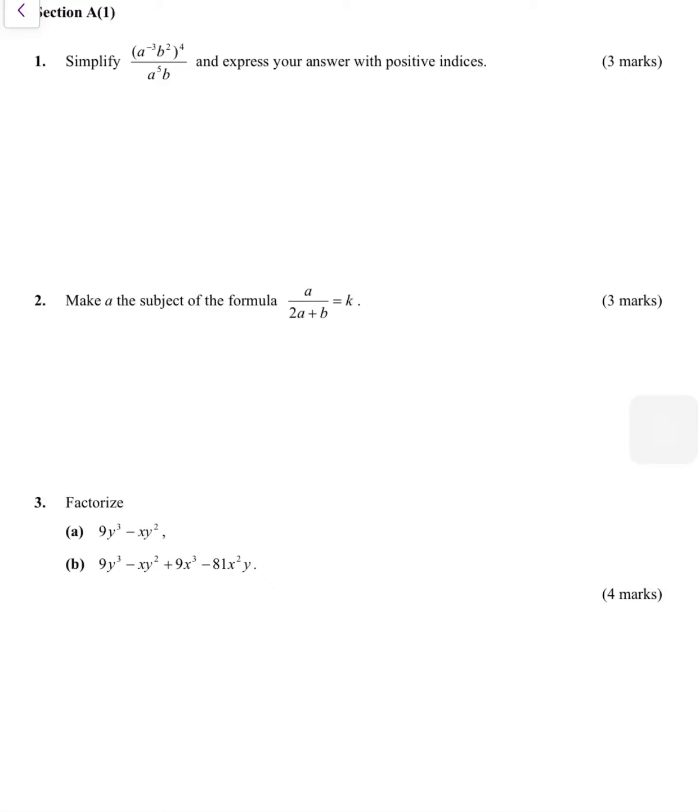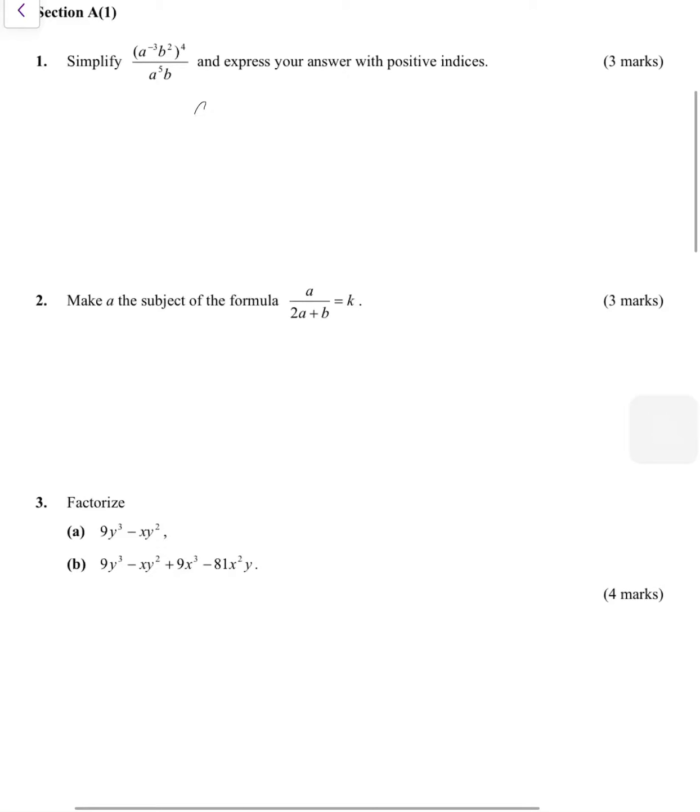Okay, so let's look at the first three questions of the week 3 DSE type questions. First of all, for the index laws, same way, just multiply the power of 4 to both terms inside the bracket, so you get a to the power of negative 12 and b to the power of 8.